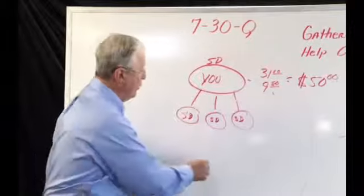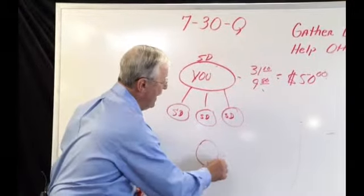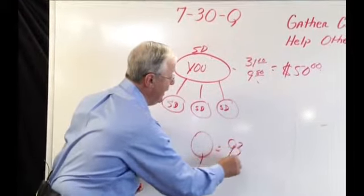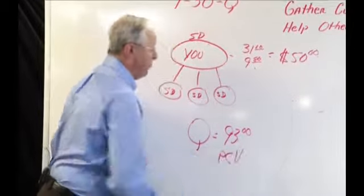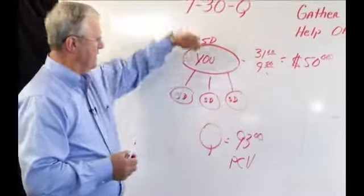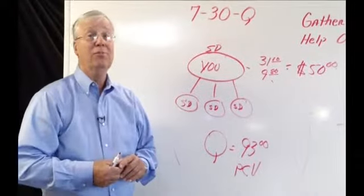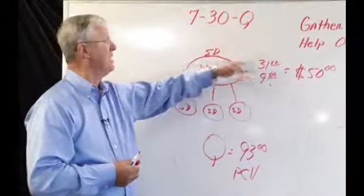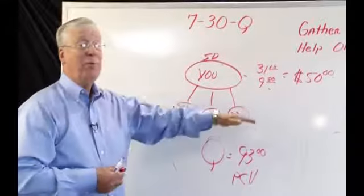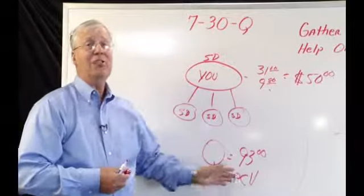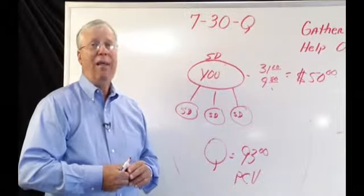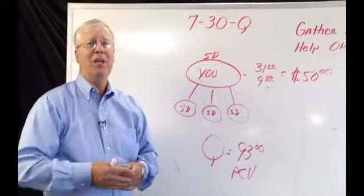Jimmy, what's the Q? Well, the Q, that is $93 in personal and customer volume, PCV. This is that success unit I just showed you. But we've got our customers in seven days. We have three people get their customers, get started, get their customers within seven days. And we have $93 in personal and customer volume. You are a member of the 730Q Club. Congratulations.